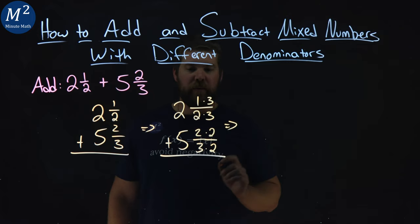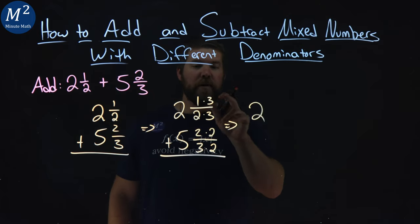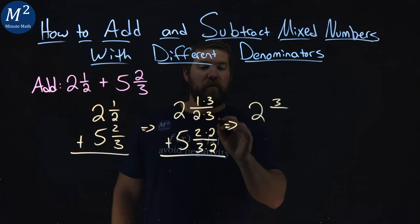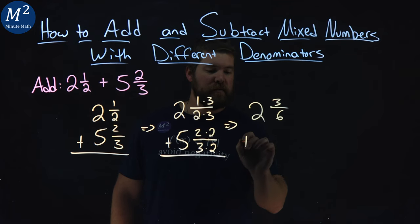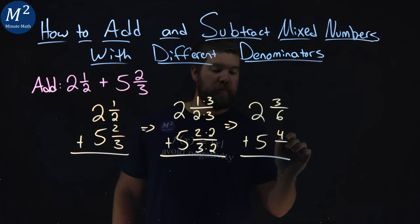From there, keep on going. We have 2, 1 times 3 is 3, over 2 times 3 is 6, plus 5, 2 times 2 is 4, over 3 times 2 is also 6.